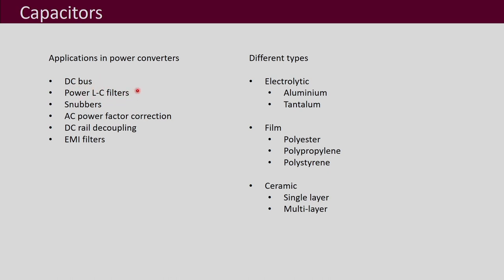Power LC filters — which may be low frequency or relatively higher frequency — also need capacitors. Then snubbers: if we use RC snubbers, RCD snubbers, or other types, most of them need capacitors. Further, AC power factor correction circuits, DC rail decoupling, and EMI filters are some of the other places where we need capacitors in power converters.